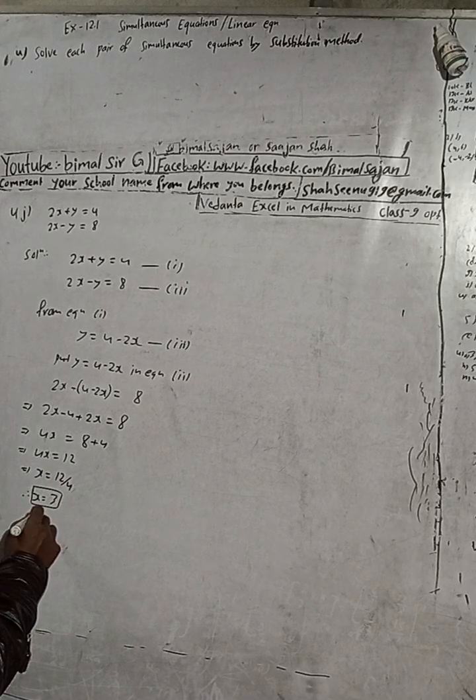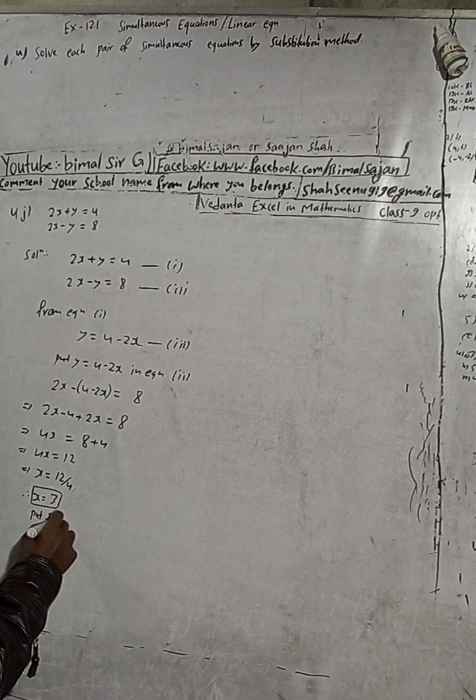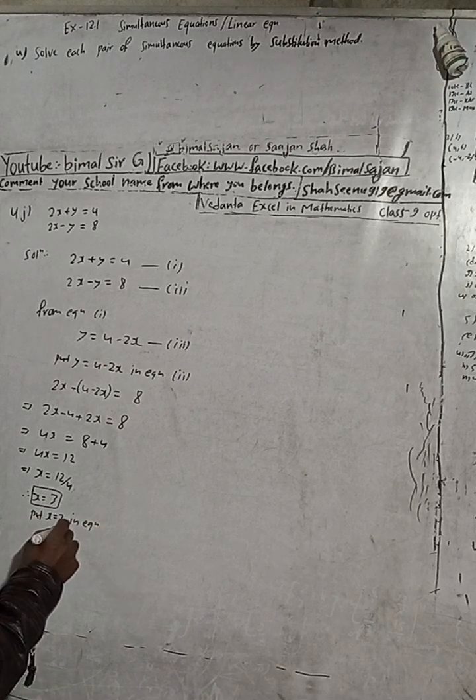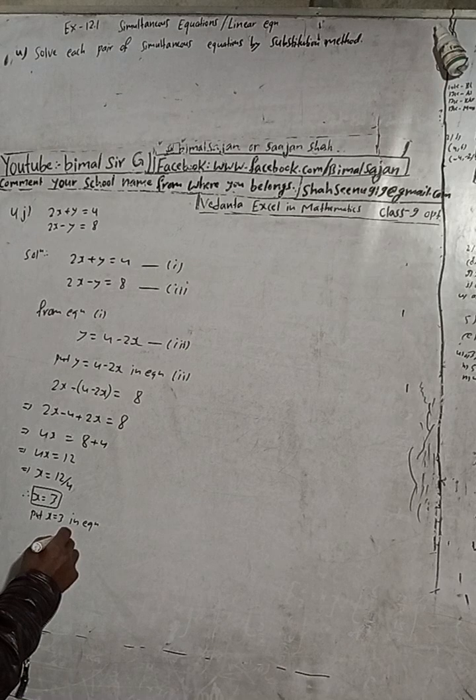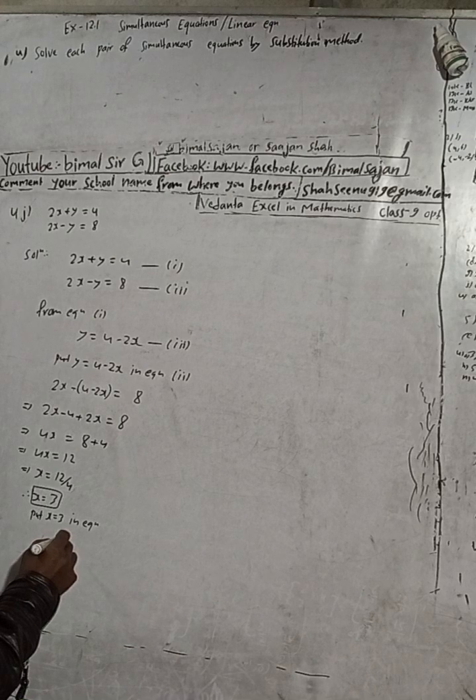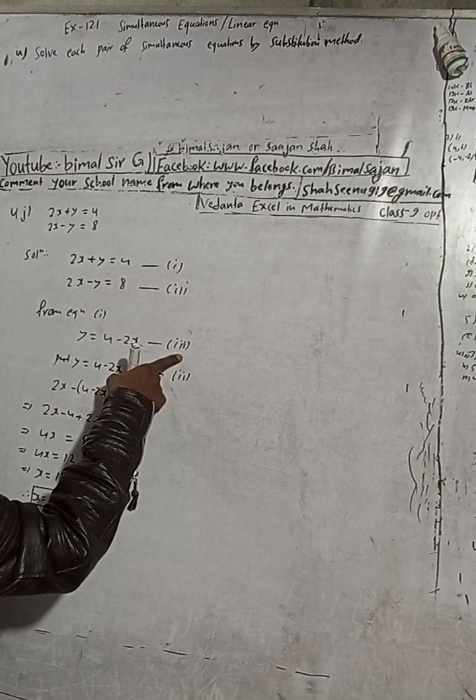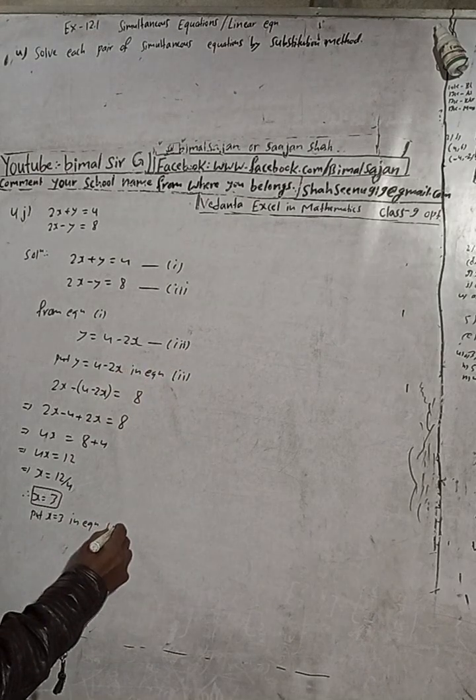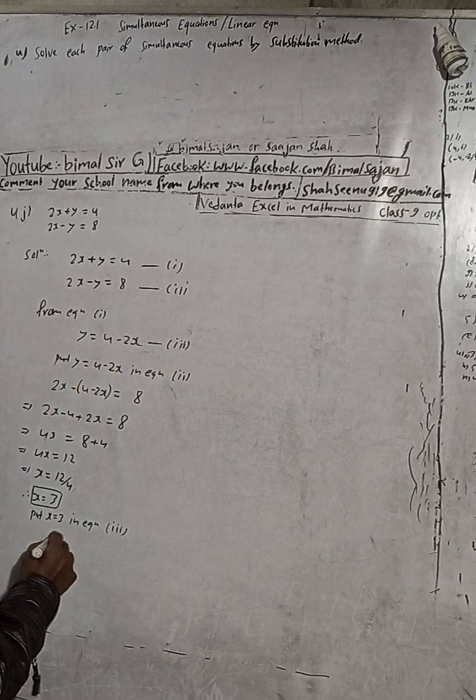Now put x = 3 in equation 3. This is a simple equation: y equals 4 - 2x.